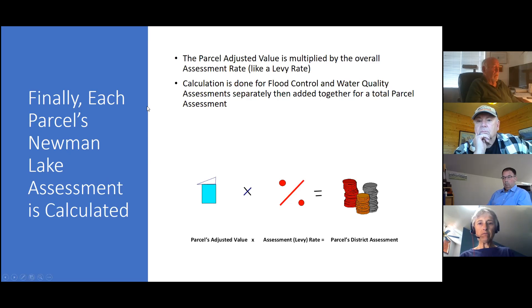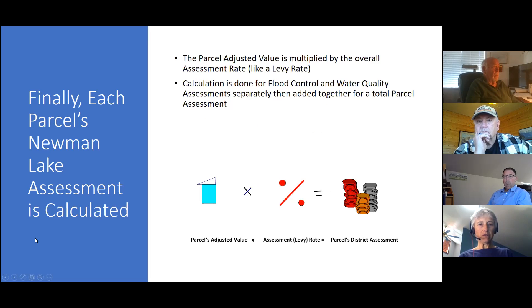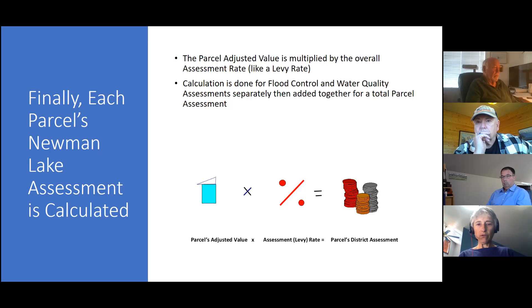Finally, the parcel's adjusted value is multiplied by that levy rate to come up with the parcel's district assessment. It's done for flood control and for water quality, and then they're added together for a total parcel assessment for the district.